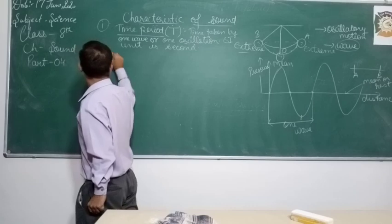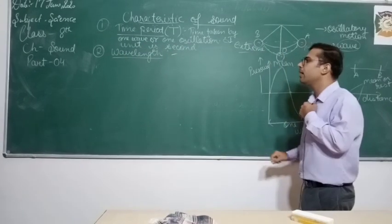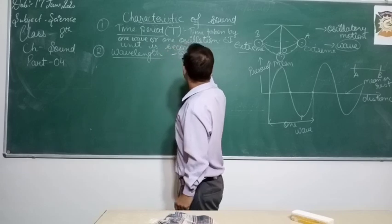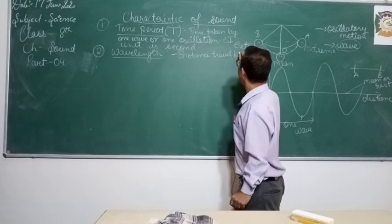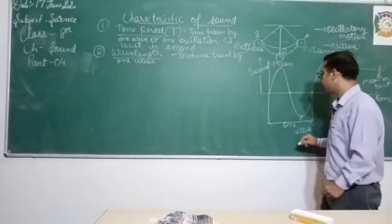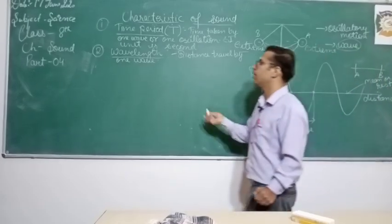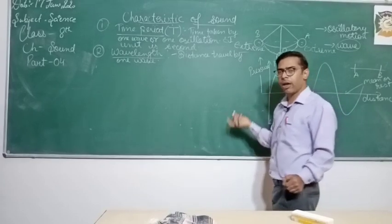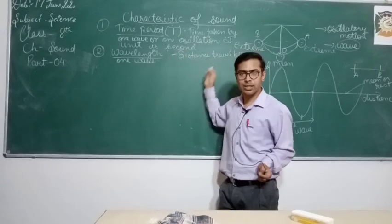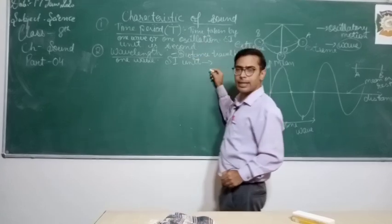Next is wavelength. You will not find it in your Class 8 book; you will study it in detail in Class 9. But the basic definition: wavelength is the distance traveled by one wave. In one wave, how much distance has it covered — that is given by the wavelength of that sound or light. Since it is a distance, the SI unit of wavelength is meter.